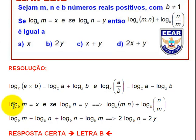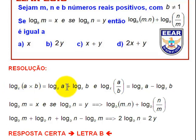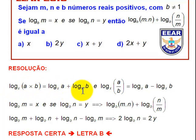Vamos lembrar um detalhe. Eu tenho um logaritmo numa base X qualquer, desde que esse X seja diferente de 1. O logaritmo de um produto se transforma em uma soma de logaritmos. Ou seja, o logaritmo na base X de A vezes B é igual ao logaritmo na base X de A mais o logaritmo na base X de B.